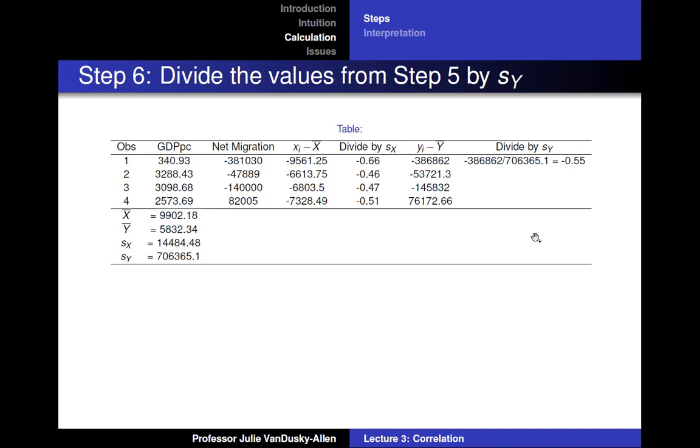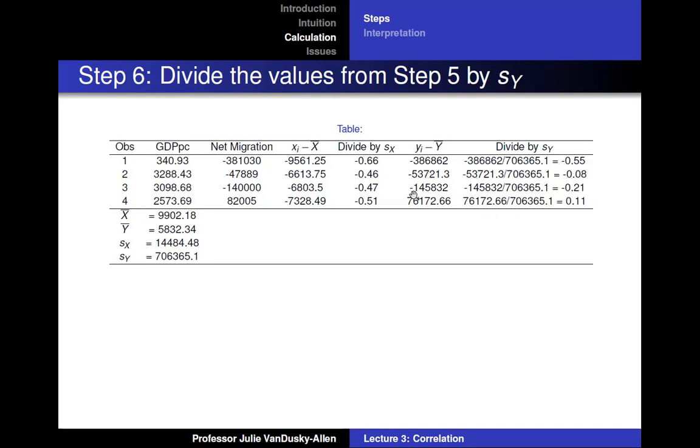Then you divide the values from step 5 by the standard deviation of y. Negative 386862 divided by 706365.1 equals negative 0.55. And you do this for the rest of the observations.